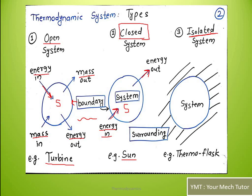The third type is the isolated system. Isolation means if there is no mass transfer and no energy transfer — neither from the system to its surrounding nor from the surrounding to the system — such a type of system is called an isolated system.